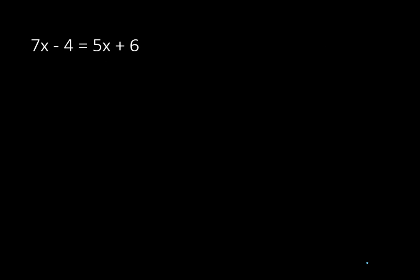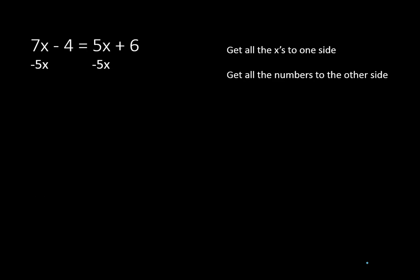Here's our next equation: 7x minus 4 is equal to 5x plus 6. Go ahead and take a look at that — maybe pause the recording and see if you can solve that one on your own. We're going to follow exactly the same steps. Get all the x's to one side of the equation. I'm going to move the x's from the right to the left by subtracting 5x from both sides. 7x minus 5x leaves me with 2x on the left side, and gets all the x's out of the right side.